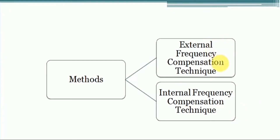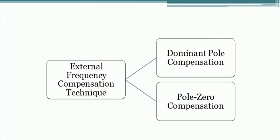Now we are going to see the external frequency compensation technique and its methods. In external frequency compensation, we take an uncompensated op-amp network and convert it to a compensated op-amp network using a compensation network designed with passive elements. There are two methods: one is dominant pole compensation and the second is pole-zero compensation. We simply add poles and zeros to the uncompensated network in order to obtain the compensated network.